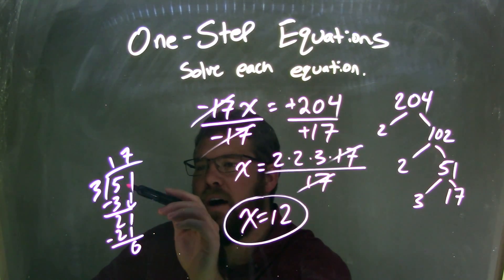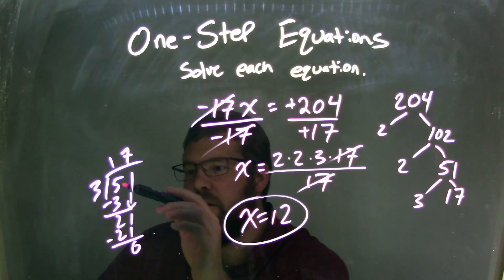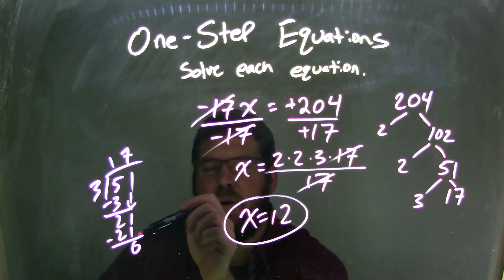And so 3 goes into 51, 3 and 5, 1 times 3 here. And then I subtract, we get 2, bring down another 1, 3 goes into 21, 7 times, we get 21, and they cancel.